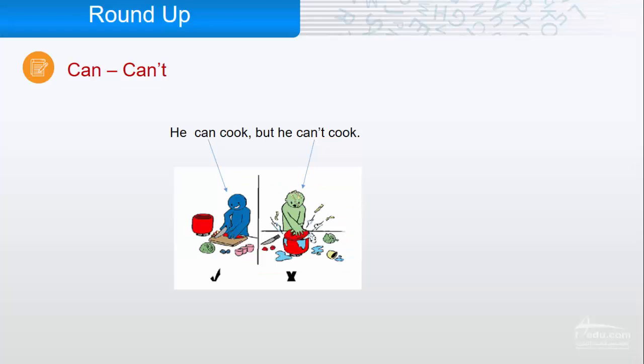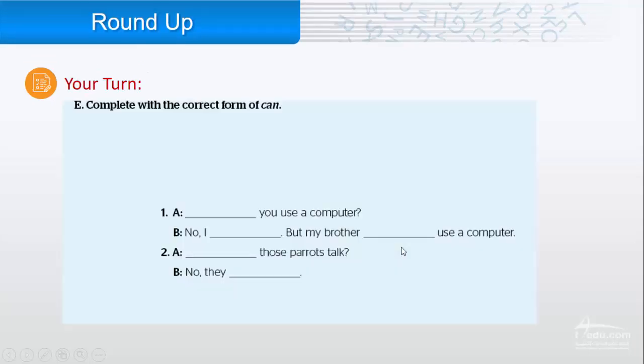Let's begin with can and can't. He can cook, but he can't cook. Complete with the correct form of can. One, can you use a computer? No, I can't, but my brother can. Two, can those parrots talk? No, they can't.